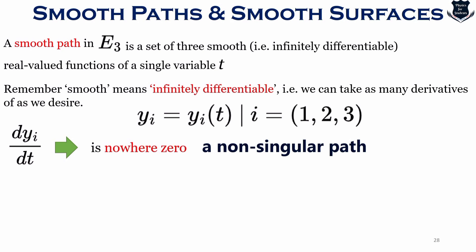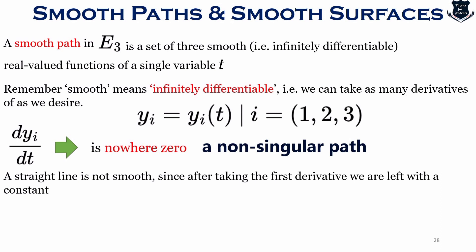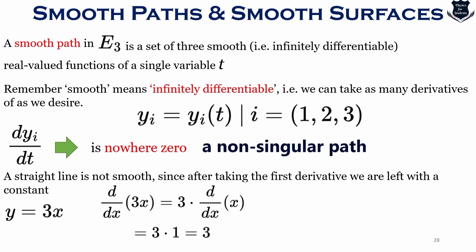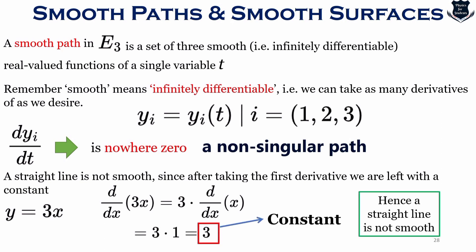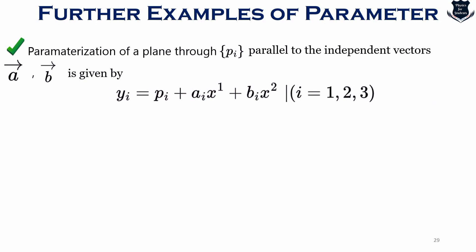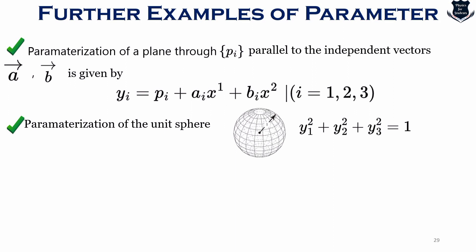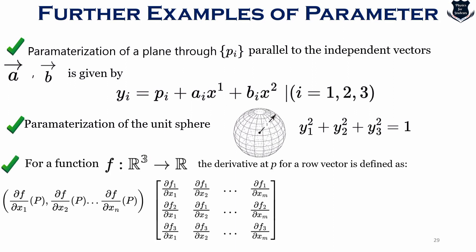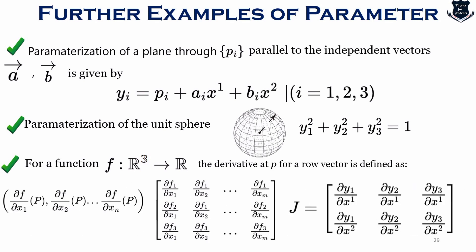A straight line is not smooth since after taking the first derivative we are left with a constant. For example, if I take y = 3x and differentiate, I get 3 — it is a constant. This shows that a straight line is not smooth. Now that we have understood smooth paths and smooth surfaces, parameterization has immense utility — it helps us in calculating and creating functions. A unit sphere can also be parameterized, and if I take a function mapping R³ to R, what we get is a Jacobian matrix, which can be parameterized further.